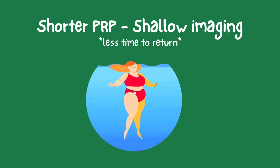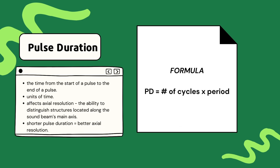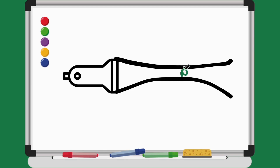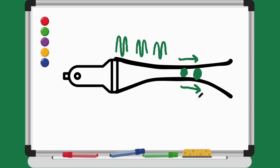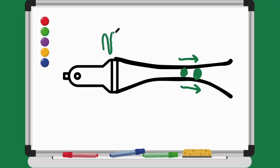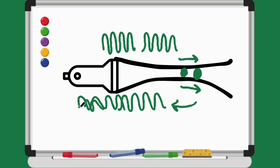Now we're going to discuss pulse duration. Pulse duration simply refers to the time it takes for one ultrasound pulse to occur — the time from the start of a pulse to the end of it. Pulse duration plays a critical role in determining the clarity and precision of ultrasound images, particularly in the axial direction. Axial resolution is the ability to distinguish between two structures that lie along the direction of the ultrasound beam, and it is greatly influenced by pulse duration. Shorter pulses are better for axial resolution — the system can precisely locate returning echoes, making images sharper and more defined. Longer pulses may degrade axial resolution because returning echoes can overlap, blurring structures along the direction of the beam and making it difficult to distinguish true details.